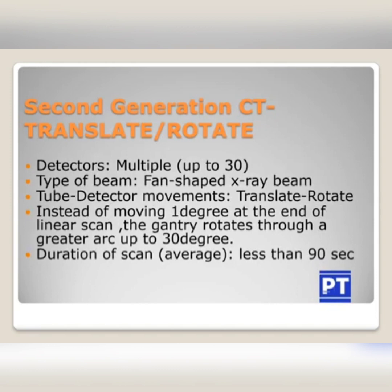Moving on to the second generation CT — it is also known as translate-rotate, the same movement type as the first generation CT, but it is different. From a single detector, the detectors increased to multiple — up to 30 detectors. The type of beam changed from a pencil beam to a fan-shaped X-ray beam. The tube-detector movement is the same translate-rotate, but instead of moving 1 degree at the end of a linear scan, the gantry rotates through a greater arc — up to 30 degrees.